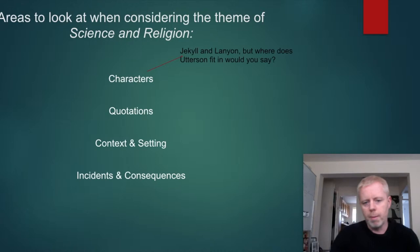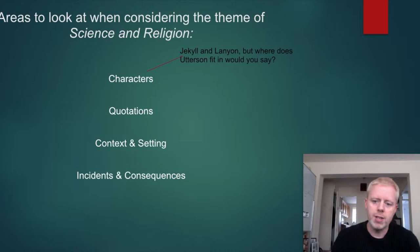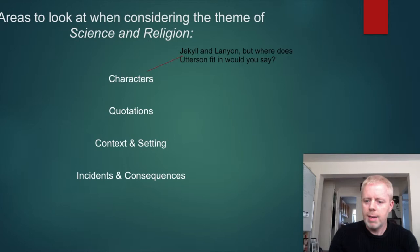When looking at the theme of science and religion, consider the characters Jekyll and Lanyon, but also where Utterson fits in. He is close friends with both. Is he more conservative and traditional like Lanyon, or does he cast his eye towards Jekyll and perhaps the criminals Jekyll represents, with a bit of envy?